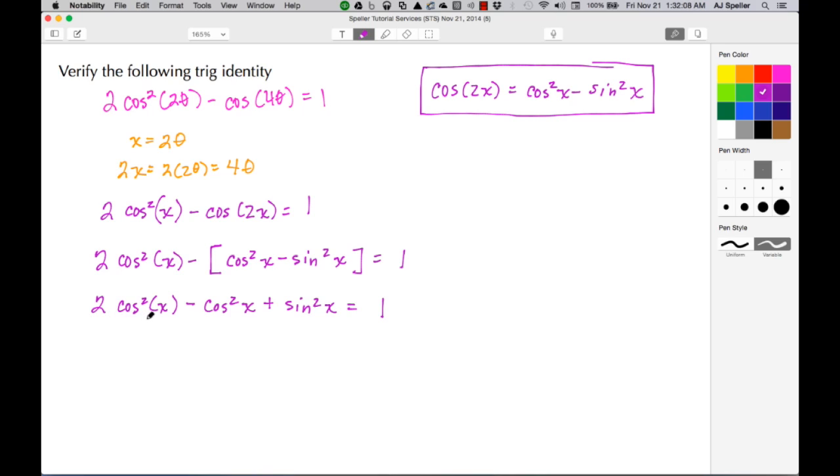So here I have 2 cos²x and I have 1 cos²x and I'm subtracting, so that resolves down to just leave me with just a cos²x. Then I have a plus sin²x, and that there's set equal to 1.